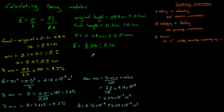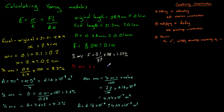Before combining all values together, we need the percentage uncertainties in force and original length. The percentage uncertainty in force = (0.1 / 8.0) × 100 = 1.25%. The percentage uncertainty in the original length L = (0.1 / 28.9) × 100 = 0.35%.